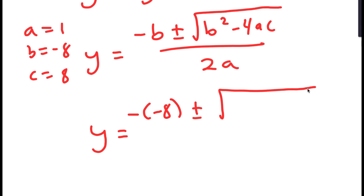Now the square root of 32 can be simplified. The square root of 32 is the same as the square root of 16 times 2, which I can rewrite as the square root of 16 times the square root of 2. The square root of 16 is 4, so I get 8 plus or minus 4 root 2 over 2.